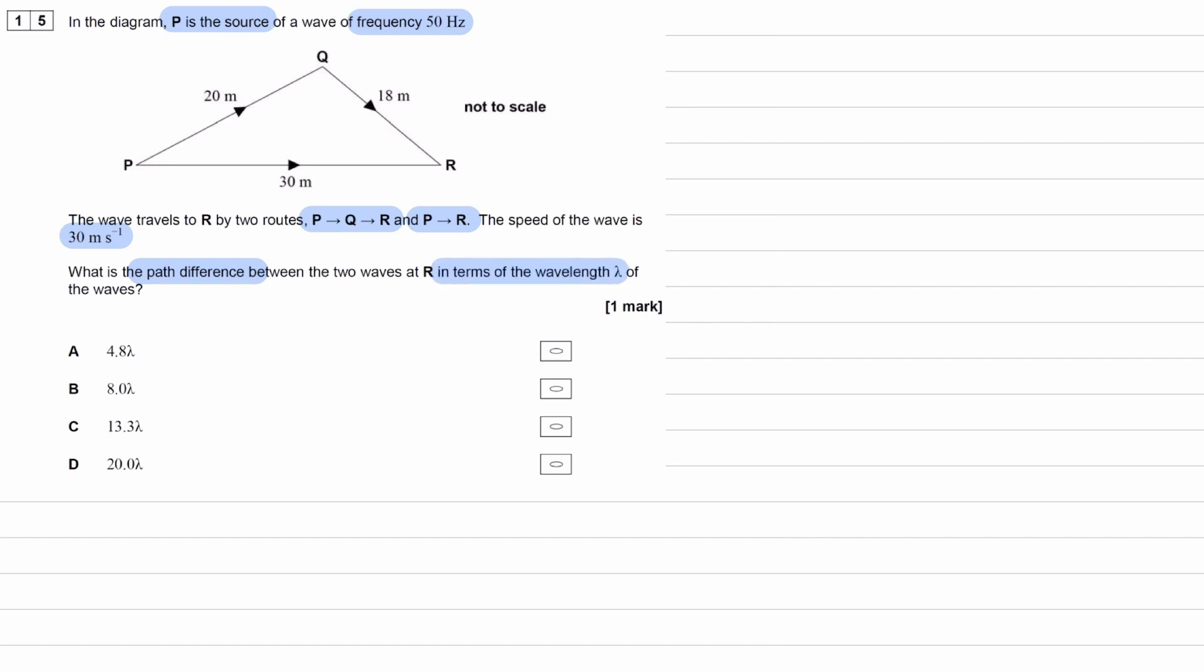So the two paths: one is P to Q to R, that is this in purple, that is PQR. And then we have the alternative path, which is P directly to R. The distance PQR is going to be the 20 plus the 18. So the purple length, 20 plus 18, that will be 38 meters. And then we have P to R is 30 meters.